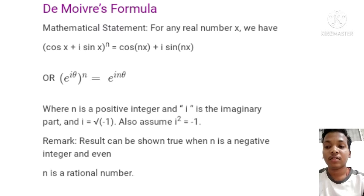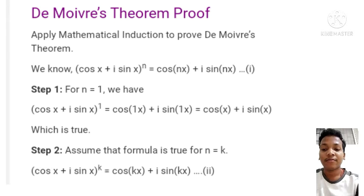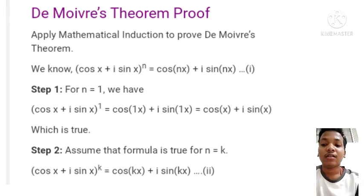Now, a proof of De Moivre's Theorem. As we know, the formula states: cos x plus i sine x, to the power n, equals cos(nx) plus i sine(nx). We will prove this by mathematical induction.